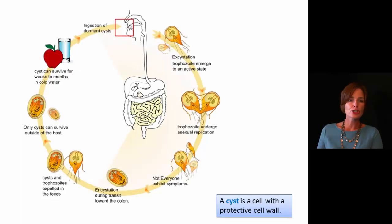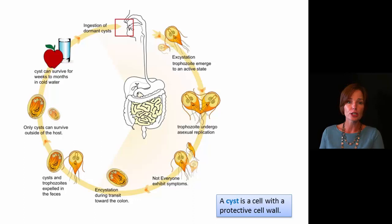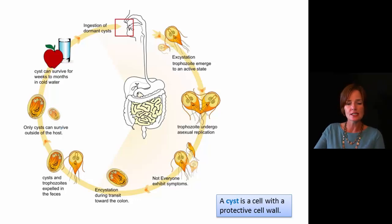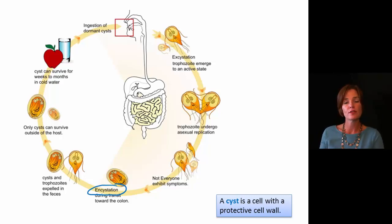Here we have an example of a protist life cycle. Many protists are going to actually have a couple of different forms they can take on, occupying different habitats throughout their entire life cycle. In this case, we see that it does live in the intestinal tract of human beings. Many different protists are capable of encystment — when the cell develops a very protective cell wall around it called a cyst.